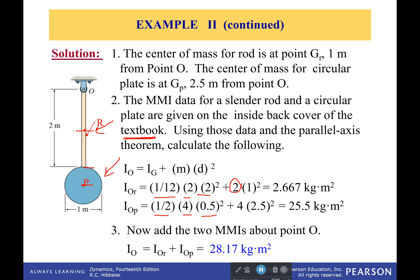So for the rod, it's mass of two times a distance of one squared. For this circle, it's a mass of four times a distance of two and a half squared.